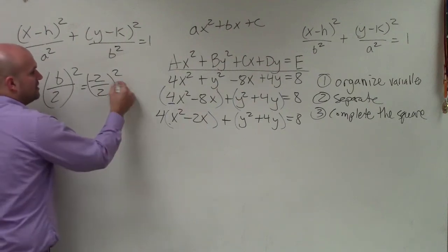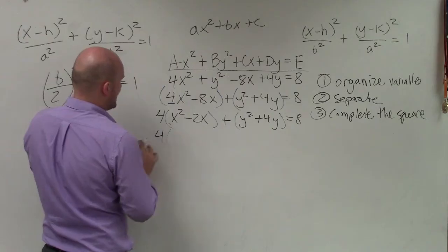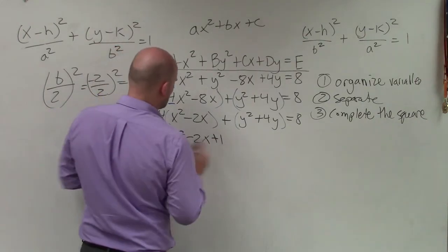1 squared is going to be positive 1. So I have 4 times x² - 2x + 1.